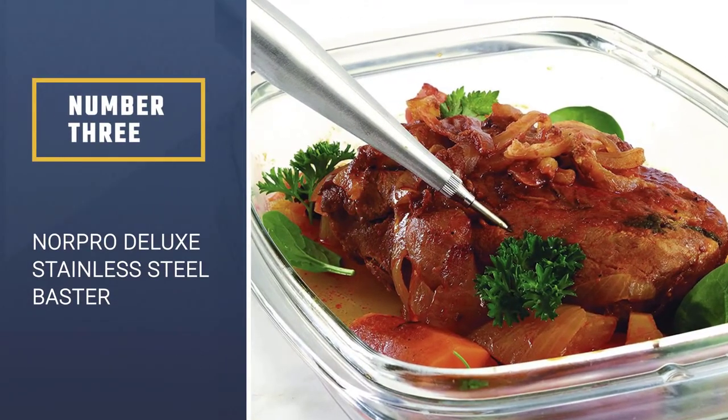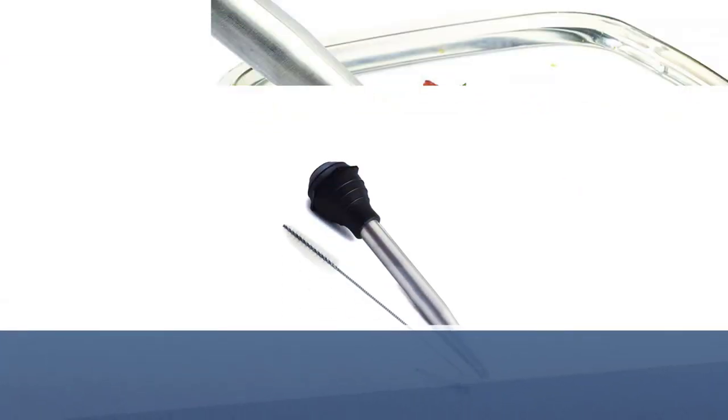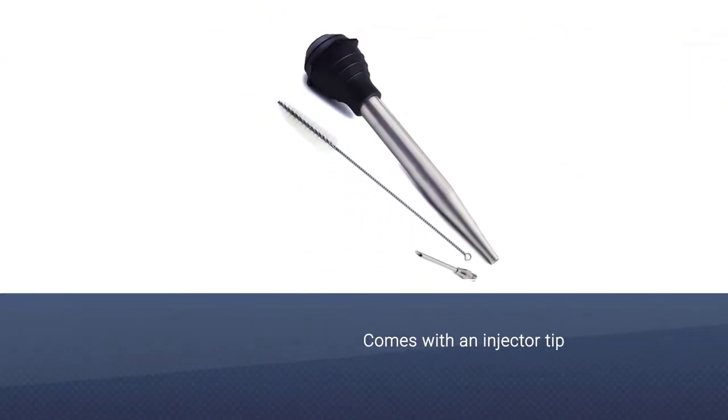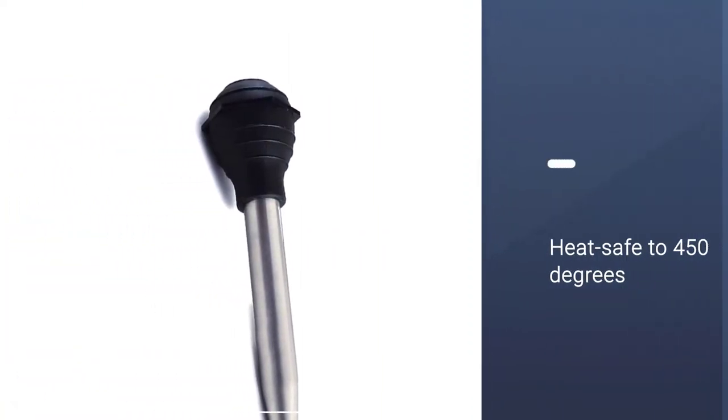This comes with an injector tip so you can prep your turkey by injecting it with flavorful liquids, spice infusions, melted butter, or other flavorings prior to cooking. This is just as handy on the grill as in the oven.